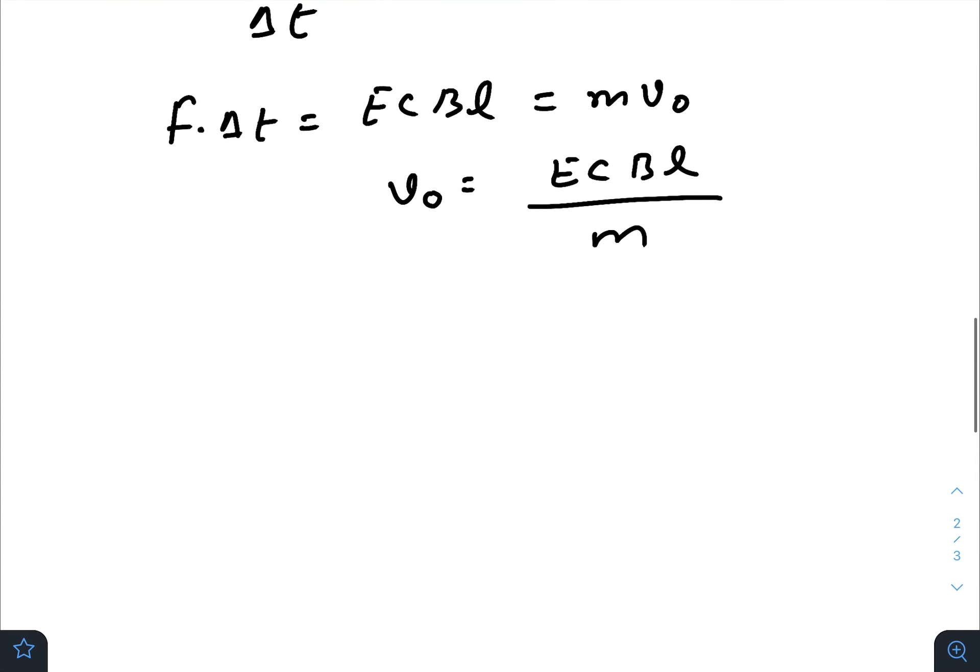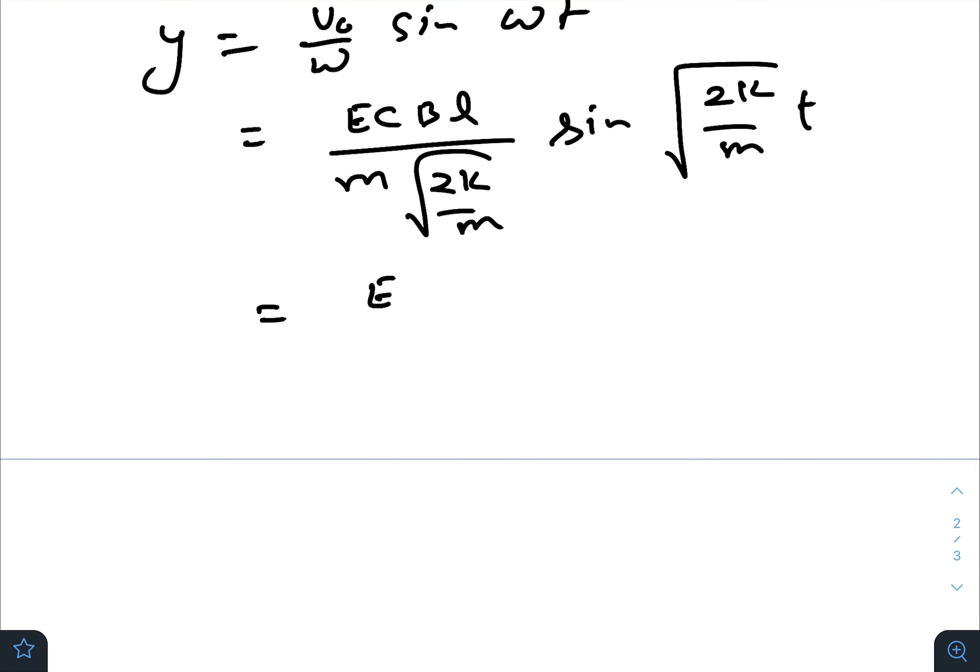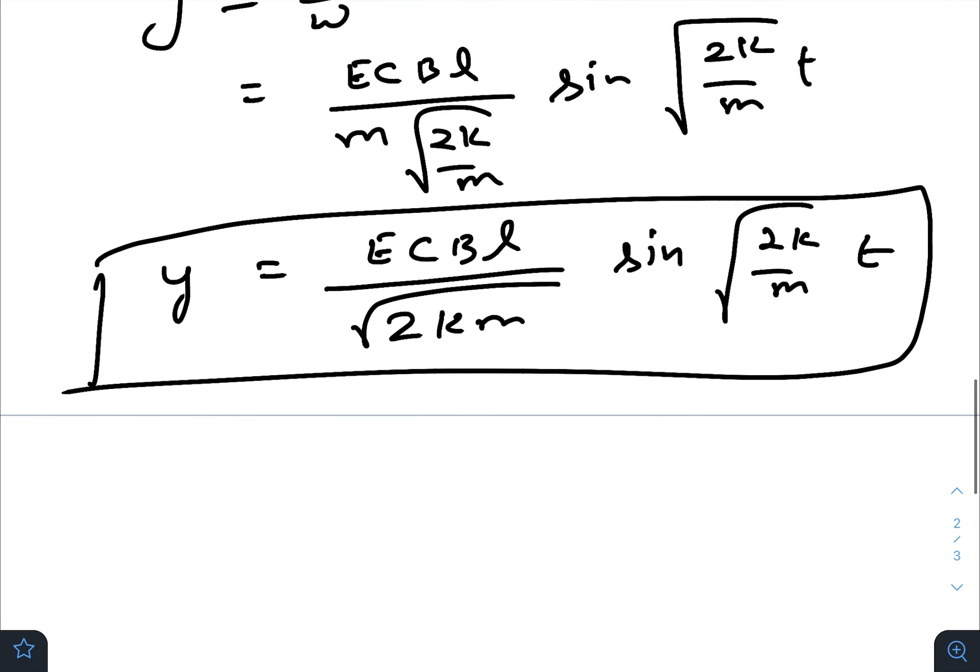The final solution or the equation of motion would be v naught by omega sin omega t. V naught is E C B l over m, omega is root over 2k by m, so sin omega is root over 2k by m times t. Let us simplify the equation: that is E C B l root over m by 2k sin root over 2k by m times t. This is our final equation of motion.